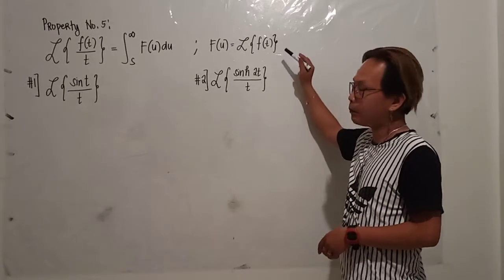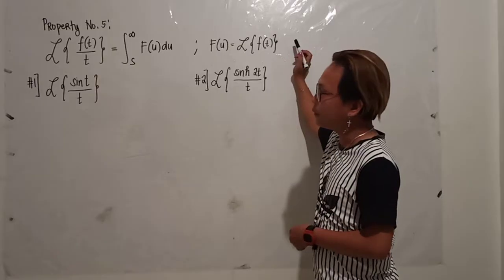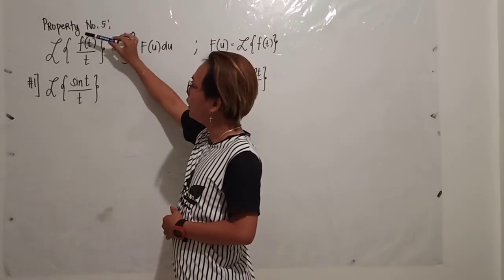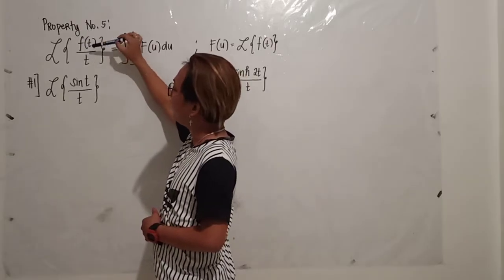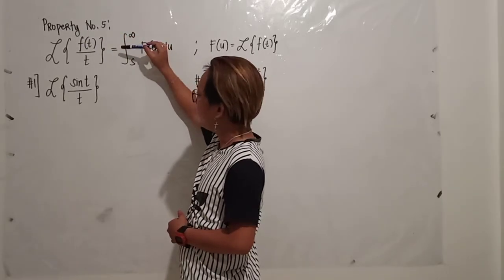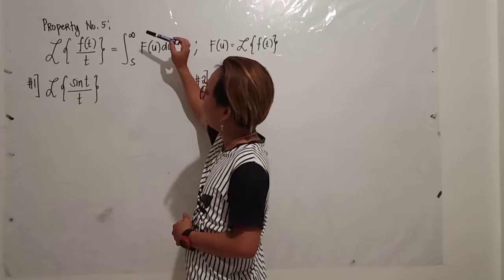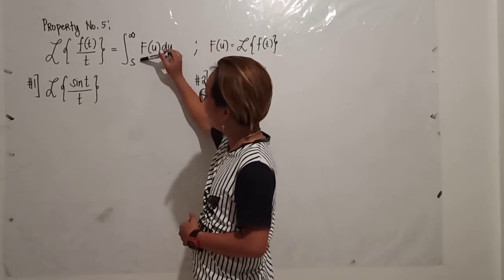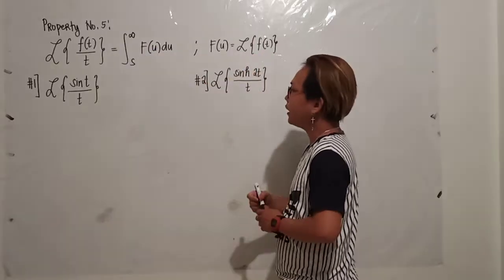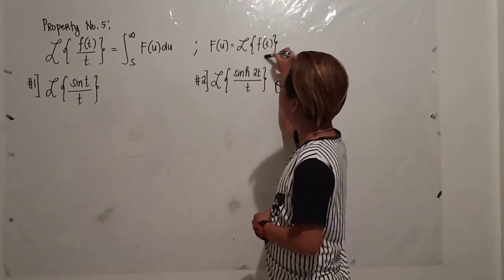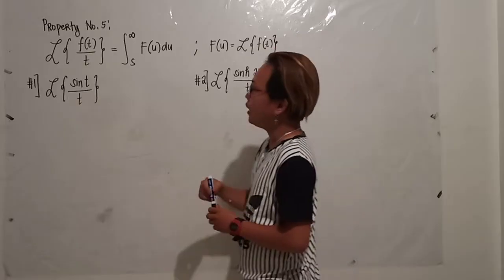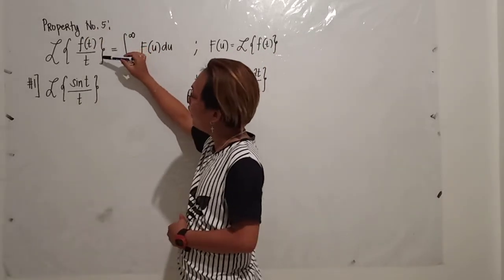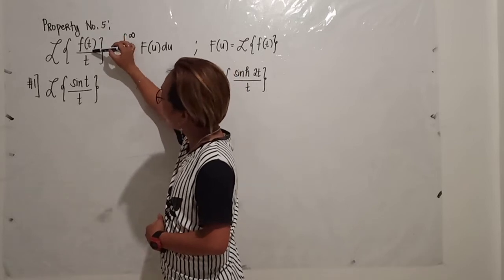Okay, last property. We have property number 5 of the Laplace transform. If you have this equation wherein you will have f of t divided by t, you will use this formula which is the integral of f of u du, wherein the limit is s to infinity. The f of u will be the Laplace transform of f of t. You must satisfy the equation that you have f of t divided by t.